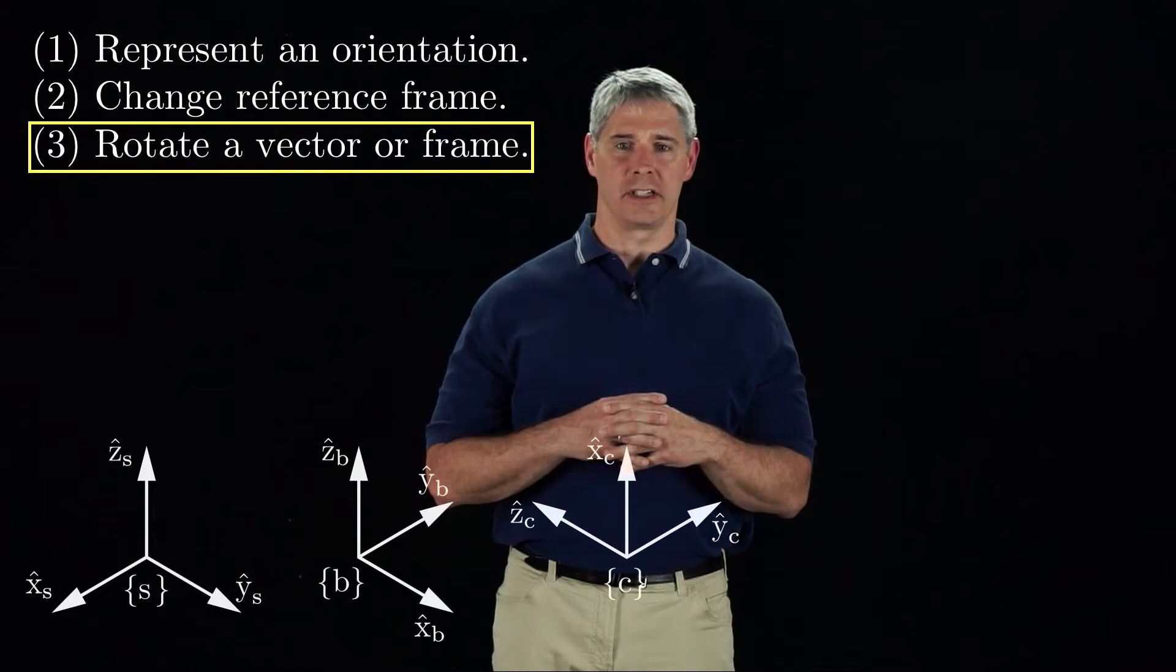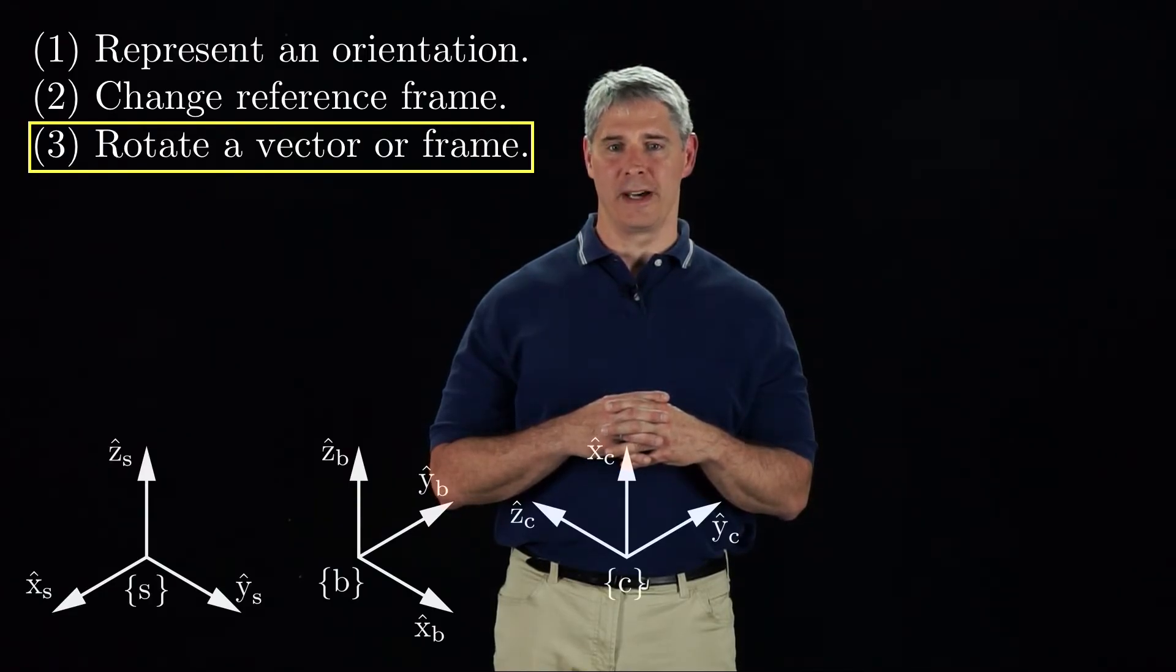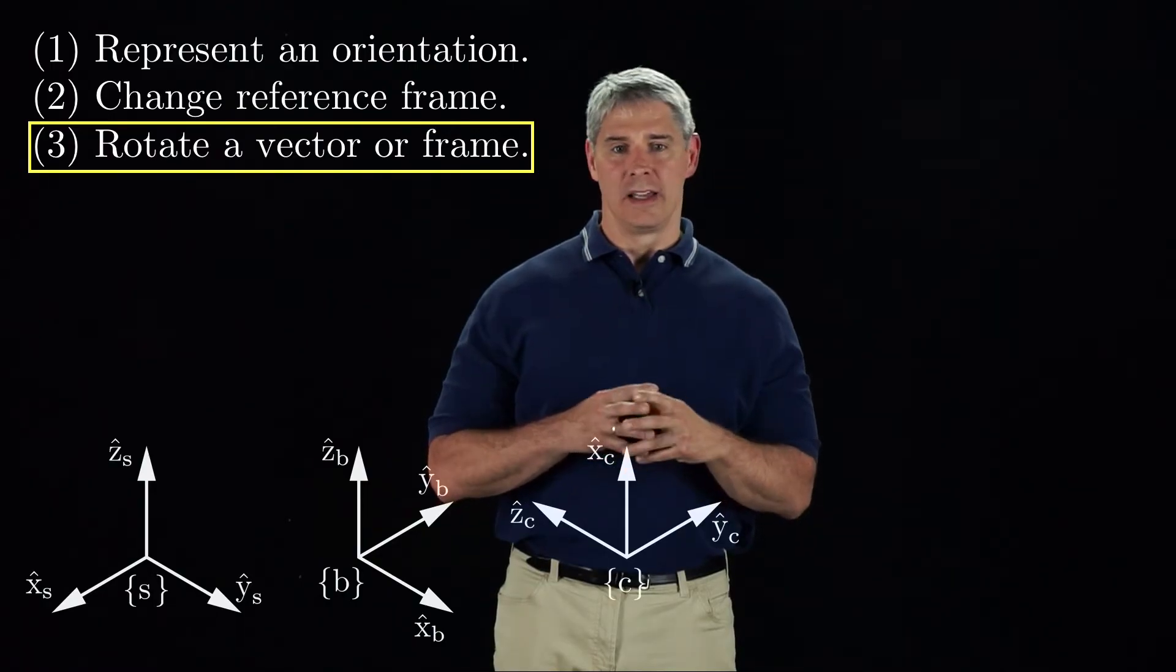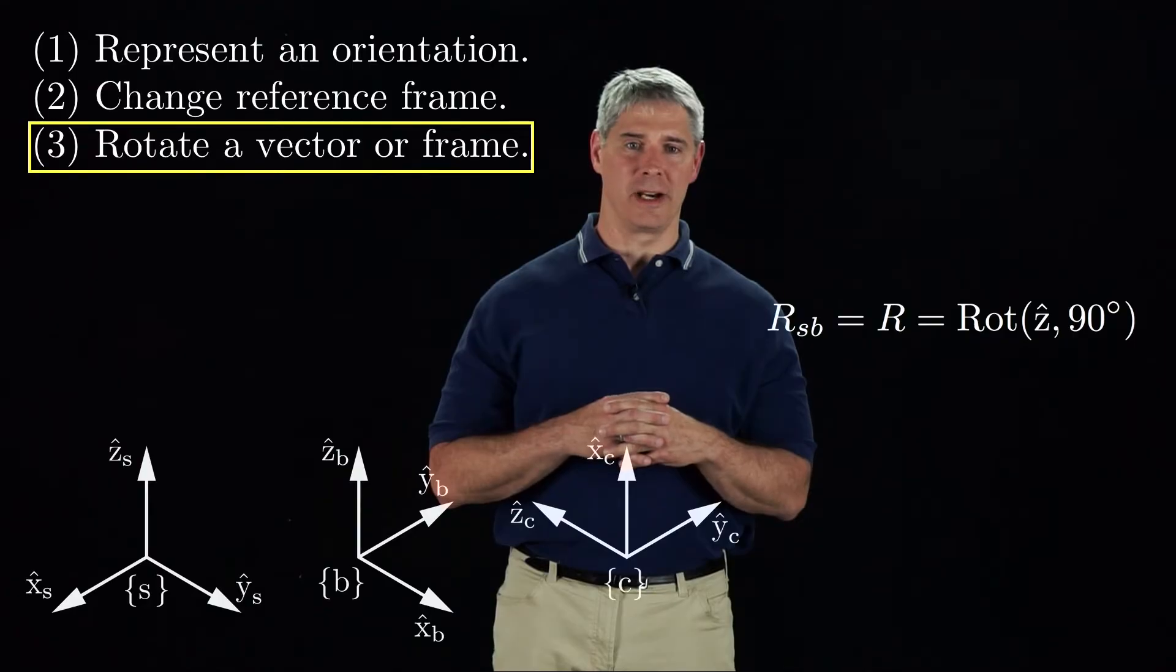The final use of a rotation matrix is to rotate a vector or frame. For example, it is apparent that the B frame is obtained from the S frame by rotating the S frame about the ZS axis by 90 degrees. Thus, we could consider the matrix RSB as an operation that rotates about the Z axis.